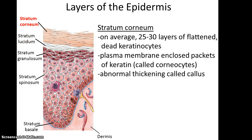And finally is the stratum corneum. It can vary greatly in how many layers of cells there are, but on average it's 25 to 30 layers of flattened, dead keratinocytes. Here, the plasma membrane encloses basically just packets of keratin. Sometimes these cells are known as corneocytes. An abnormal thickening of the stratum corneum is referred to as a callus, and it's caused by extensive friction to that part of the epidermis.